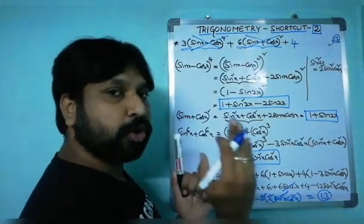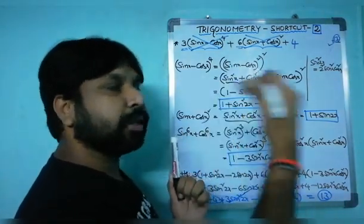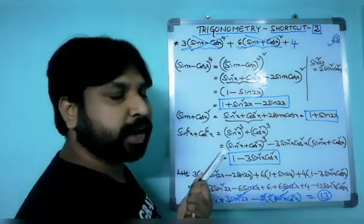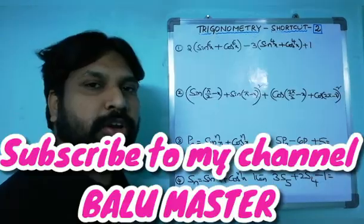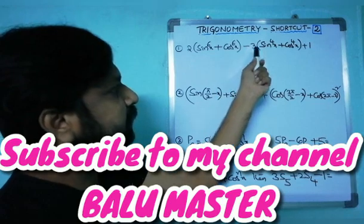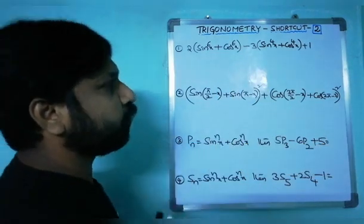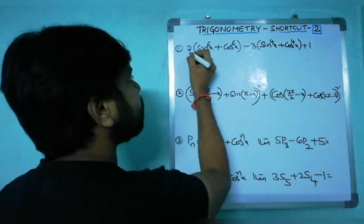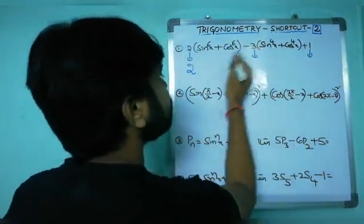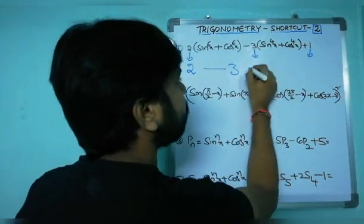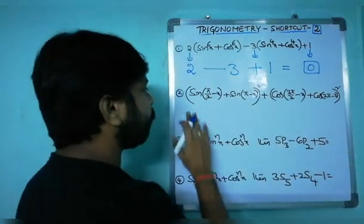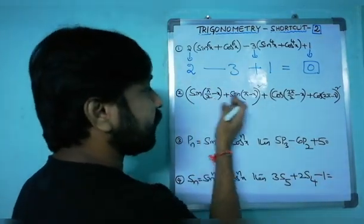Let me give multiple examples. First example: 2(sin⁶x + cos⁶x) - 3(sin⁴x + cos⁴x) + 1. Whenever the powers are the same, just consider the constants: 2 - 3 + 1 = 0. So the answer is 0.